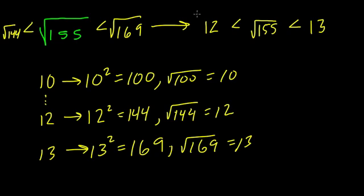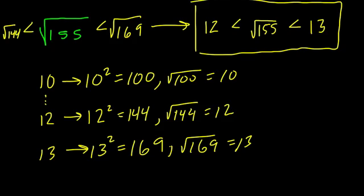So I would say that the square root of 155 is between the whole numbers 12 and 13. All right, thanks.